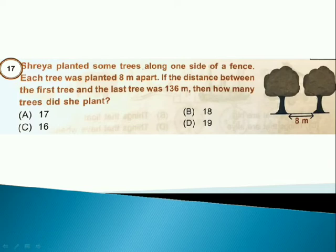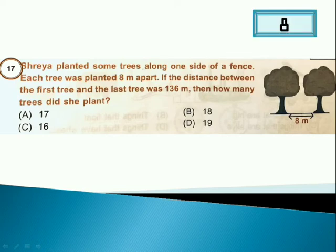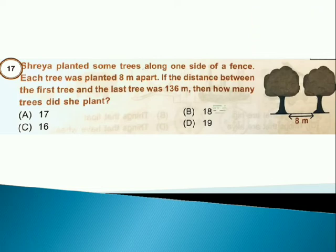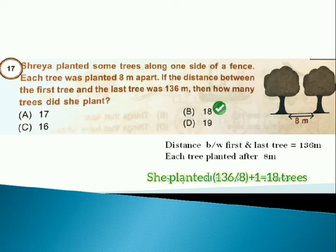Time starts now. Answer is option B. As distance between first and last tree is 136 meters and each tree planted after 8 meters. Hence, she planted 136 by 8 plus 1 is equal to 18 trees.